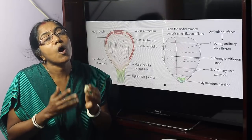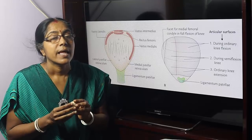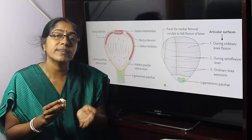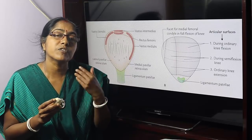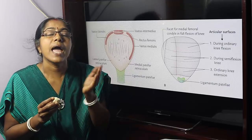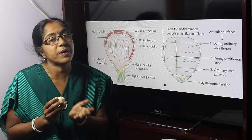Sesamoid bones ossify after birth. The patella begins ossification during three to four years of age and ossification is completed at puberty.